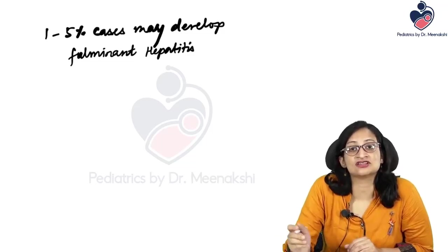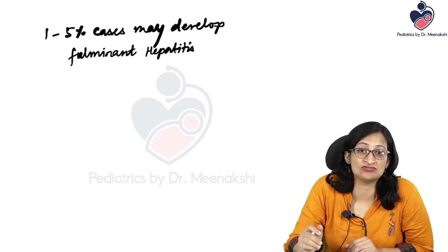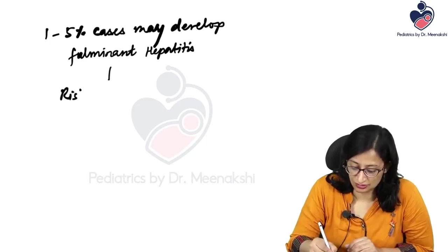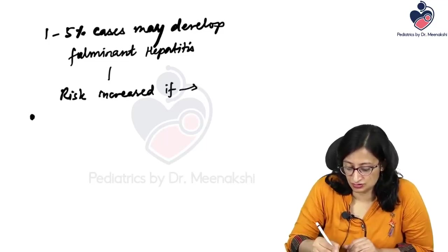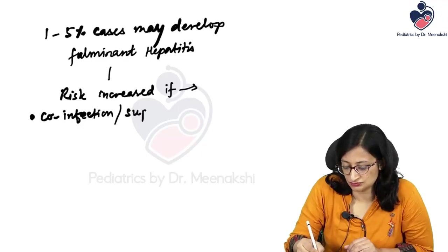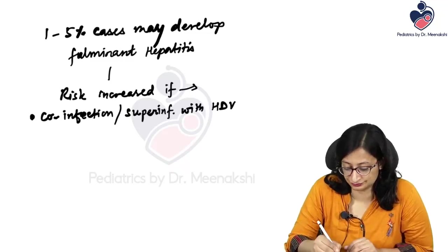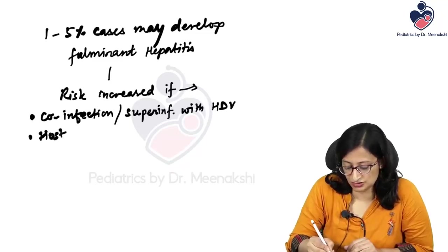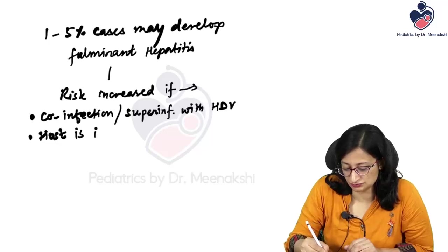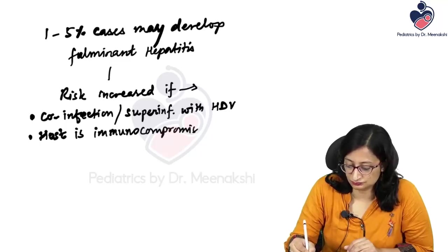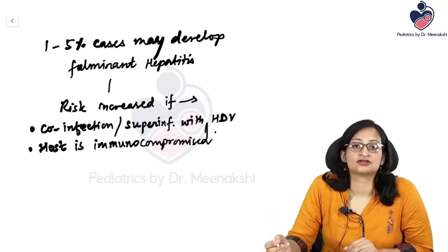The risk of fulminant hepatitis B is increased with co-infection or super-infection with hepatitis D virus, or if the host is immunocompromised.